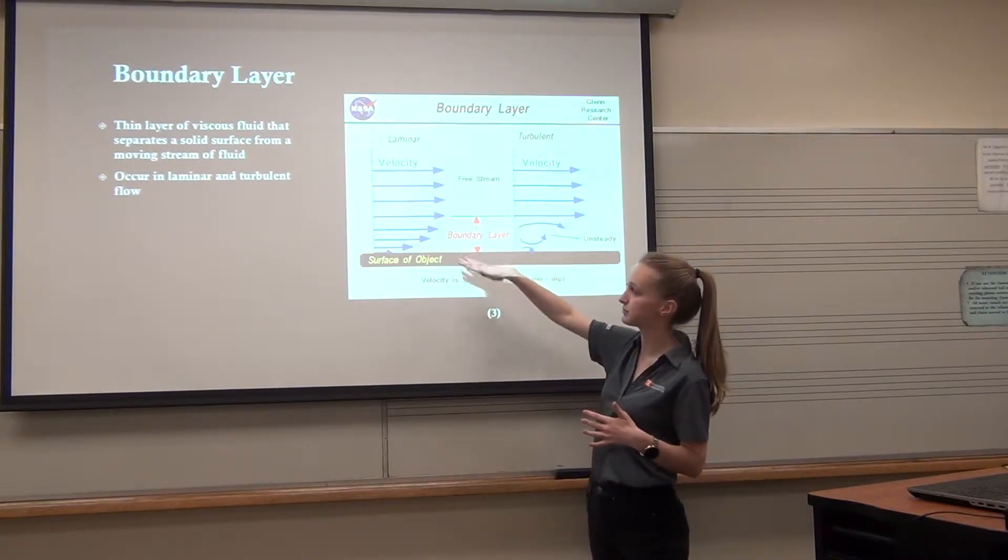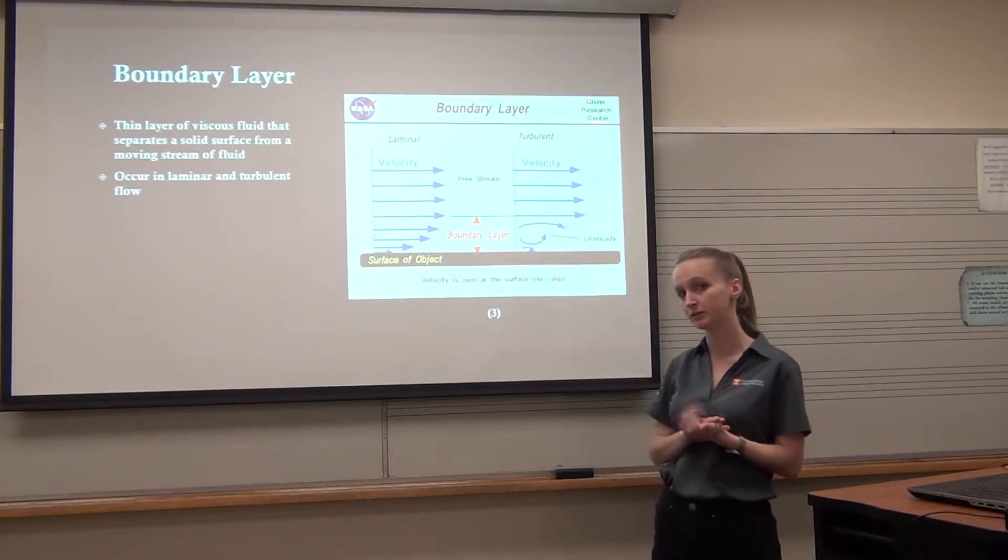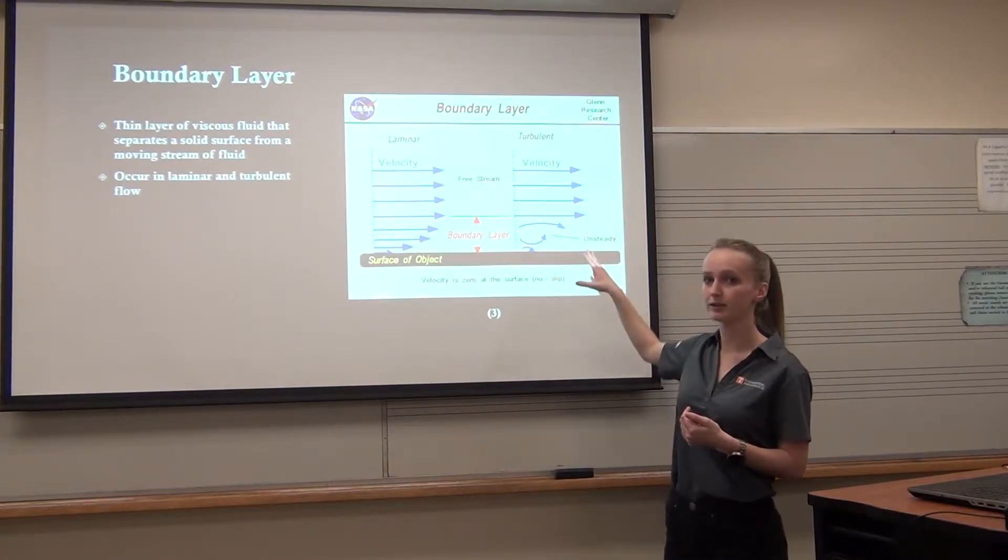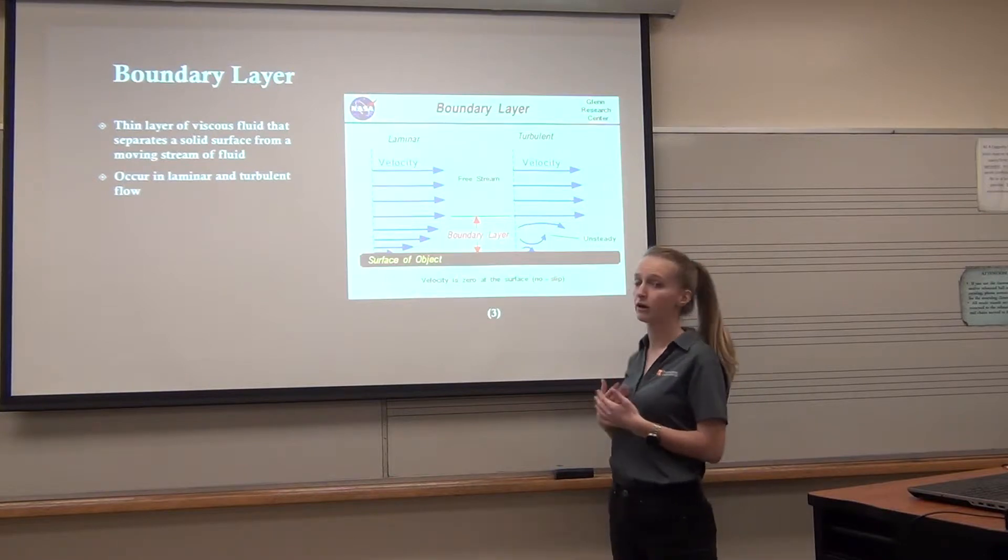As you can see here, laminar flow consists of streamlines that are constant and parallel to each other. Turbulent flow is very unsteady and has a bunch of vortices that spiral around each other and is really hard to characterize.